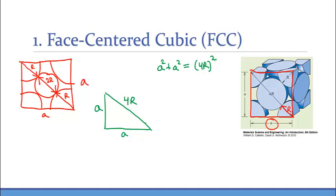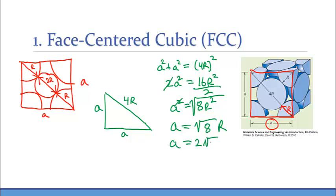Let's do some simplification and solve for A in terms of the radius. We have 2A squared equals 16R squared. Dividing by 2, A squared equals 8R squared. Taking the square root, the lattice parameter A equals the square root of 8 times R, or 2 times the square root of 2 times R. Now we have the lattice parameter in terms of the radius for a face-centered cubic unit cell.